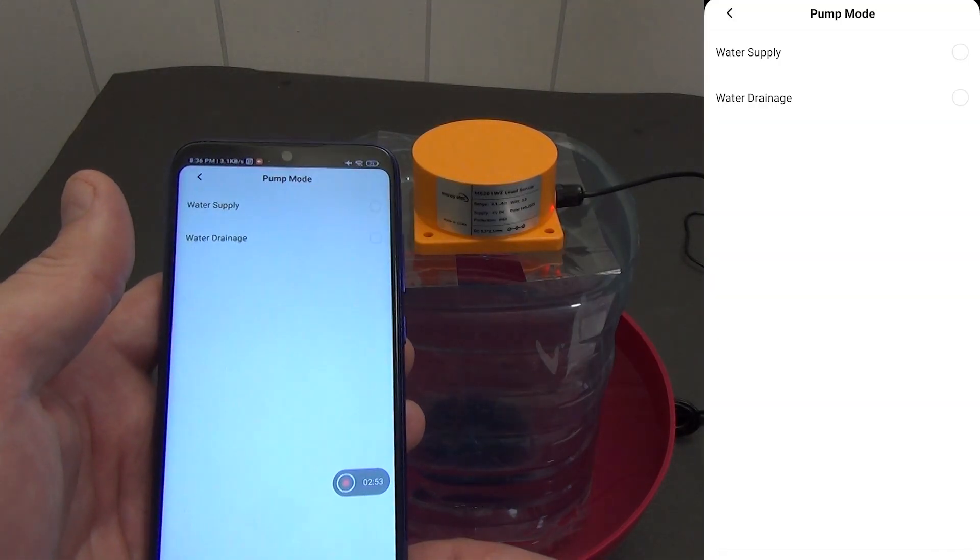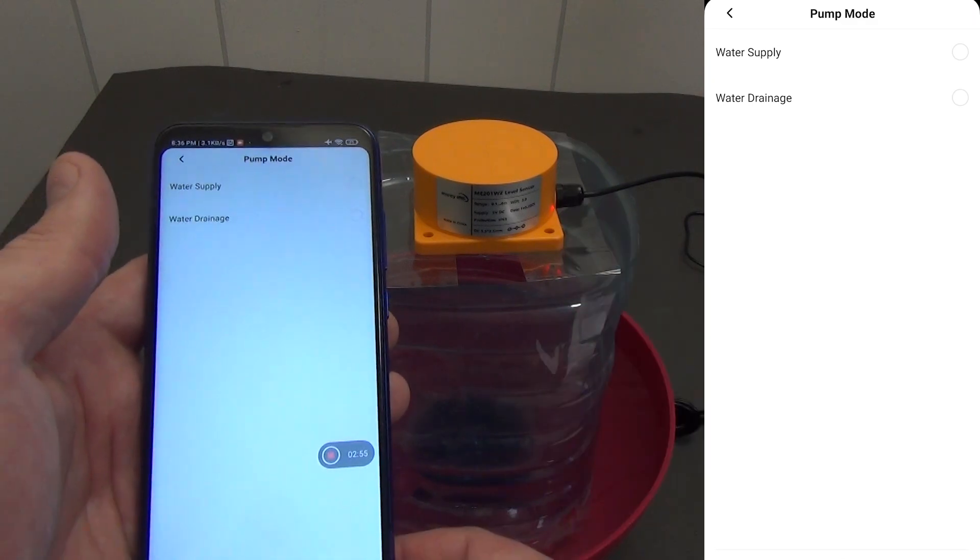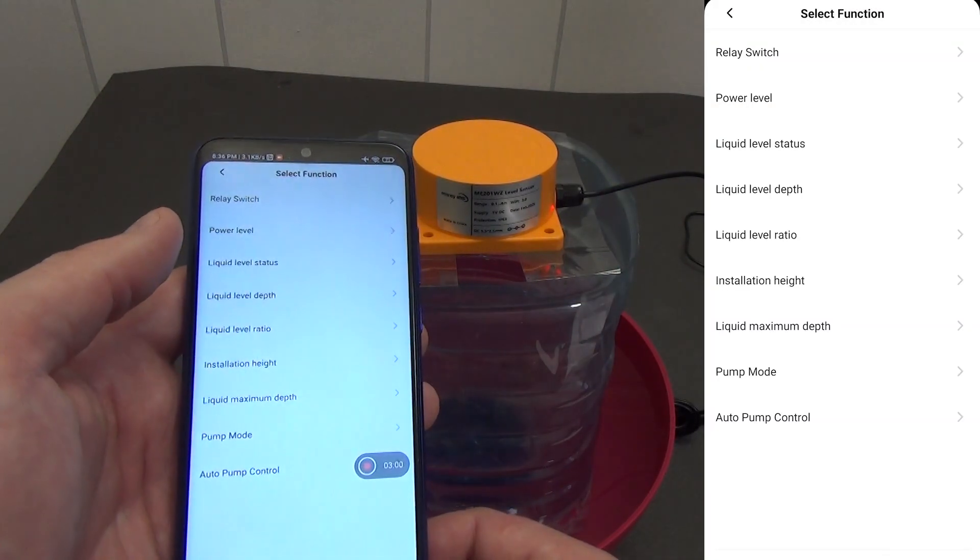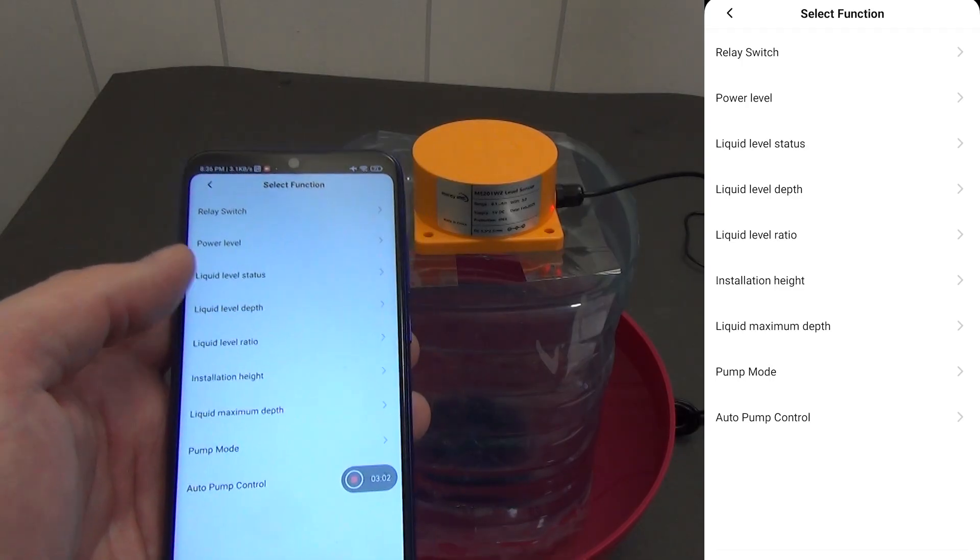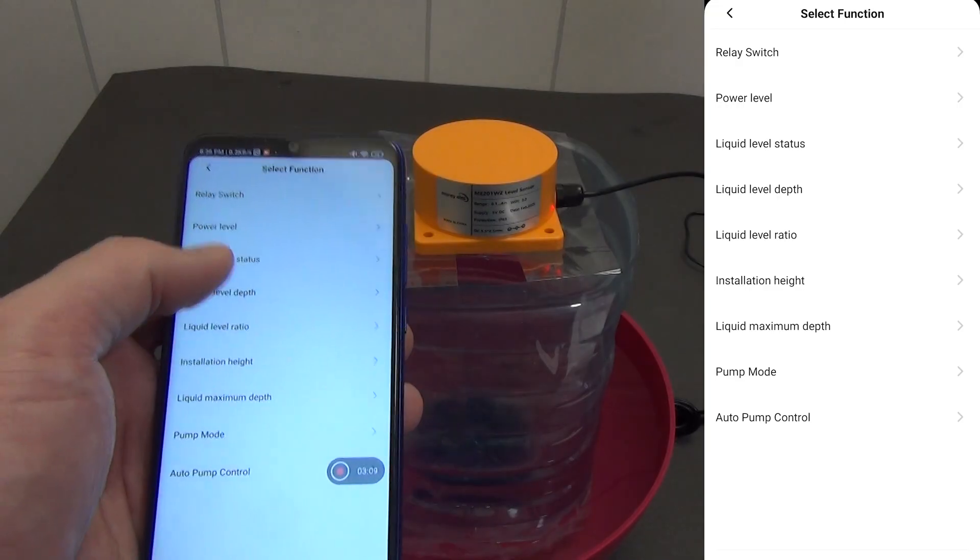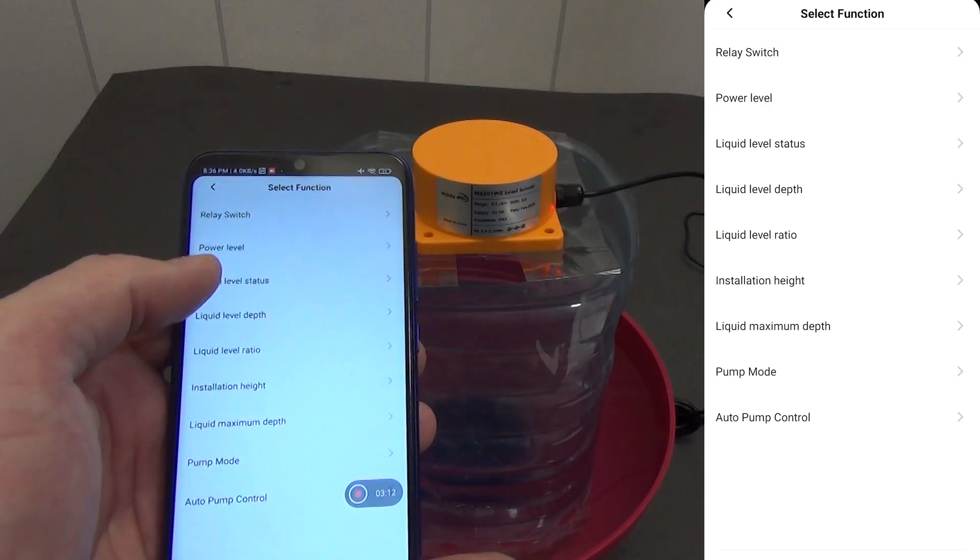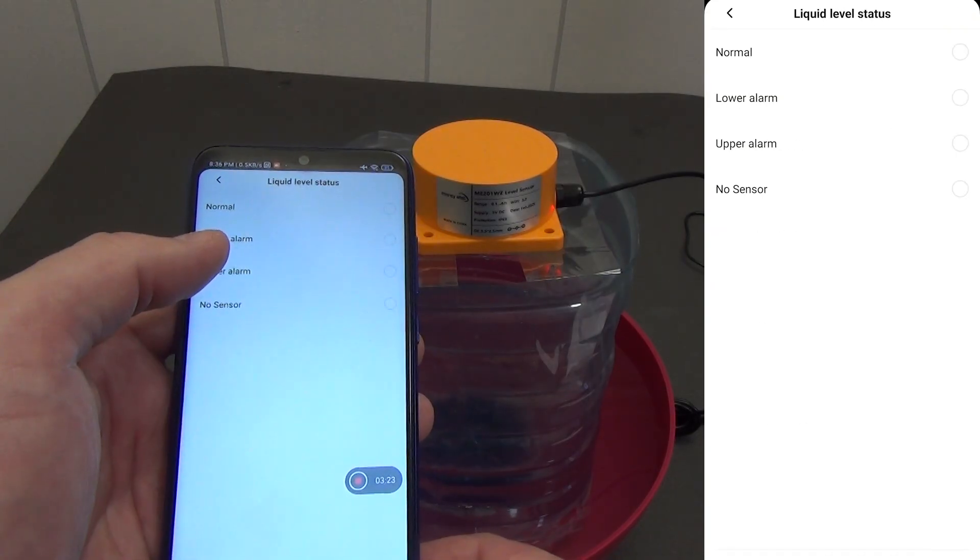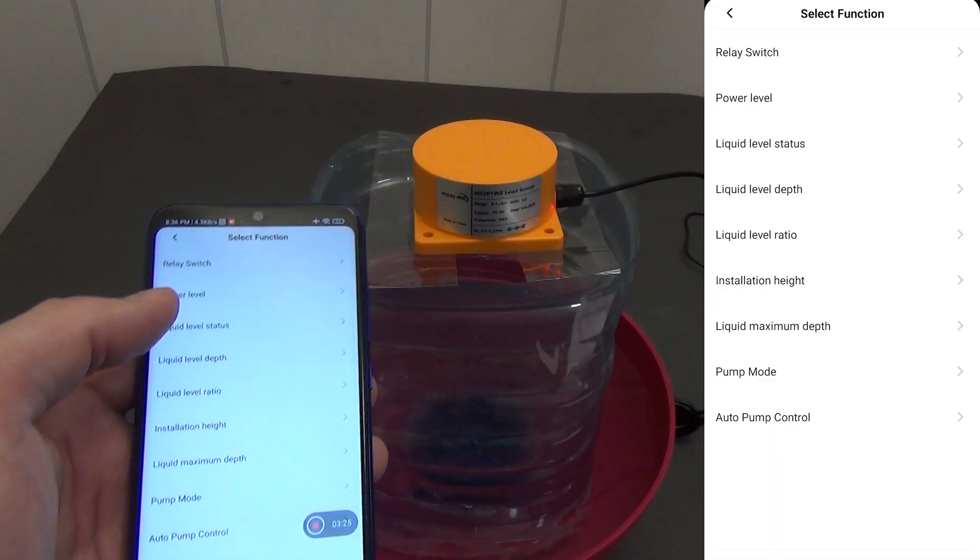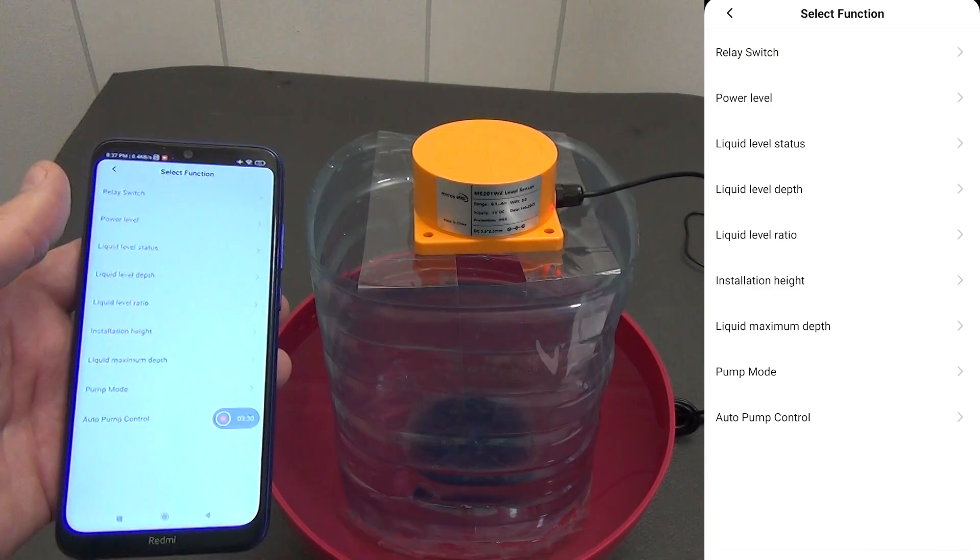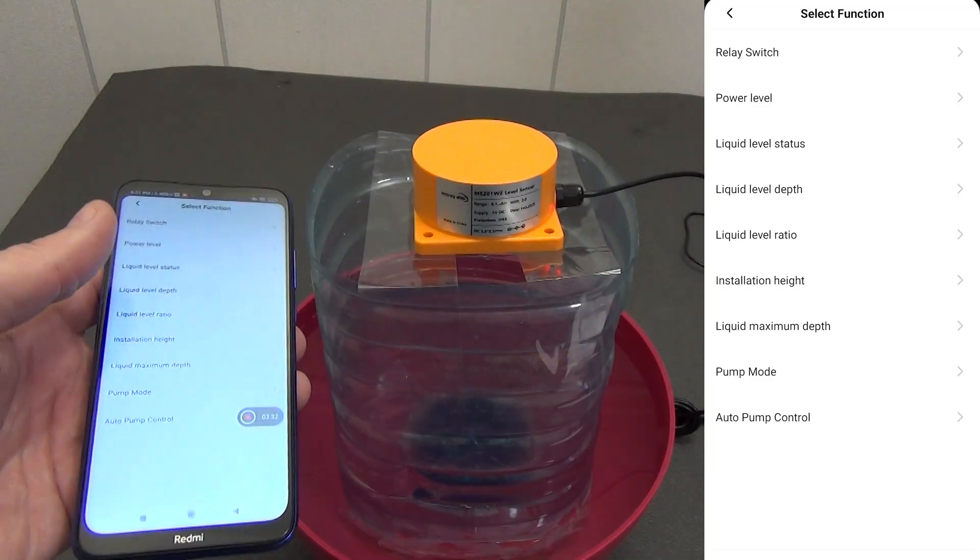Pump mode, pump operation settings. Automation based on pump operation if it is connected. Auto pump control, automation using the current pump operating mode, manually or automatically. But I think the main parameters in automation will be the following: Liquid level depth, current depth. Liquid level ratio, percentage of tank filling. Liquid level status, filling level low, normal, high. All this can be used to automatically turn the pump on and off, open or close the smart tap, send notifications or run other automation scenarios.